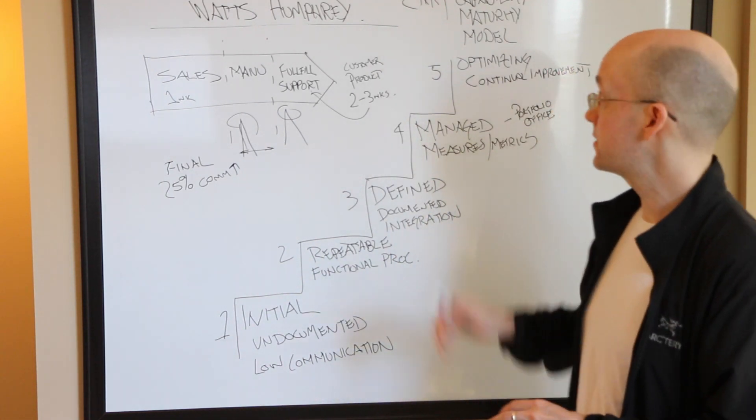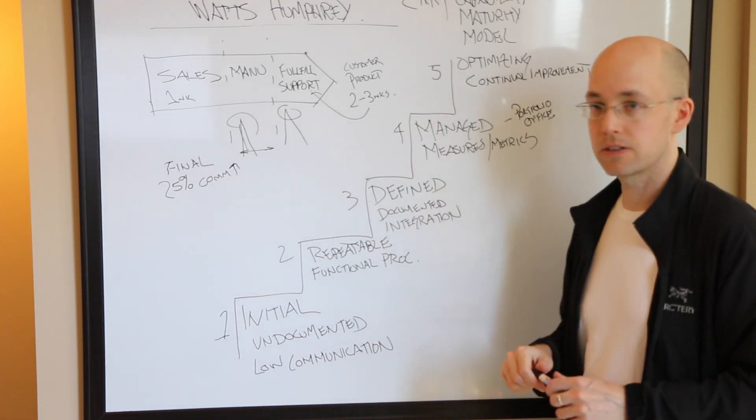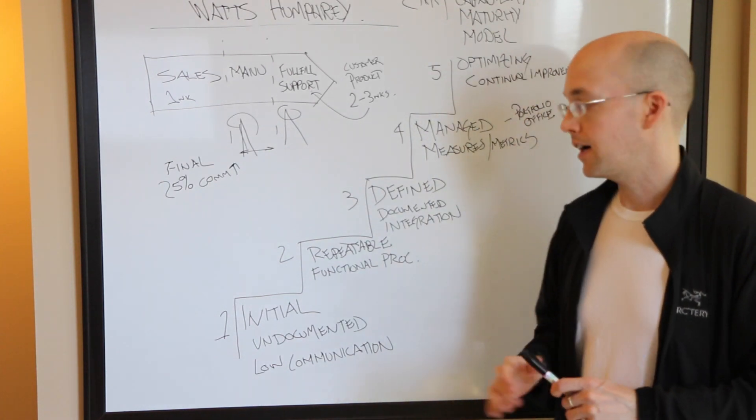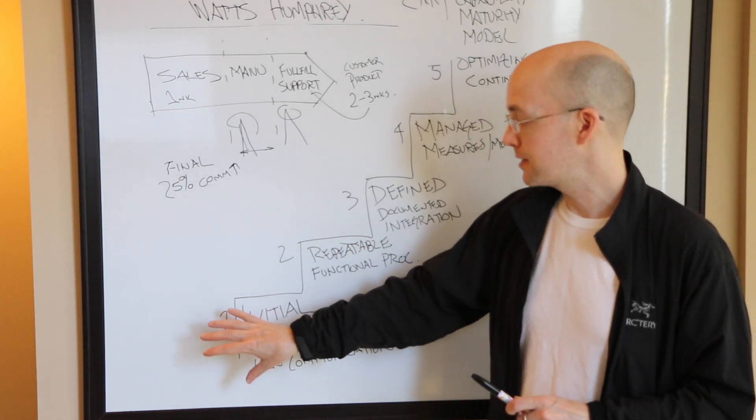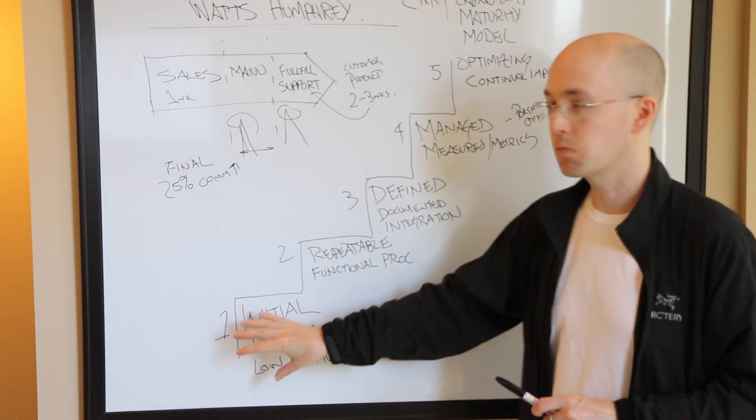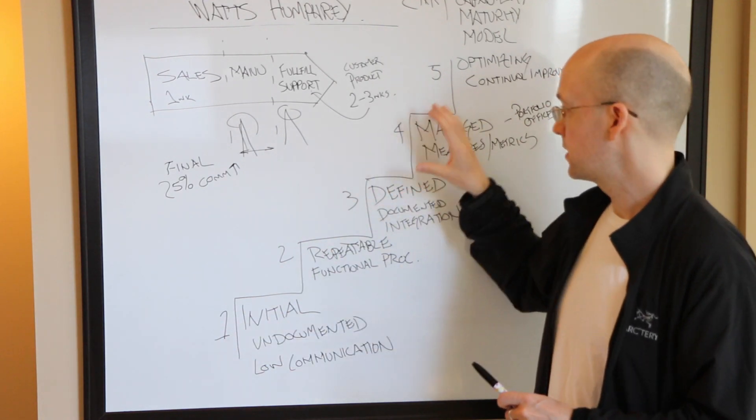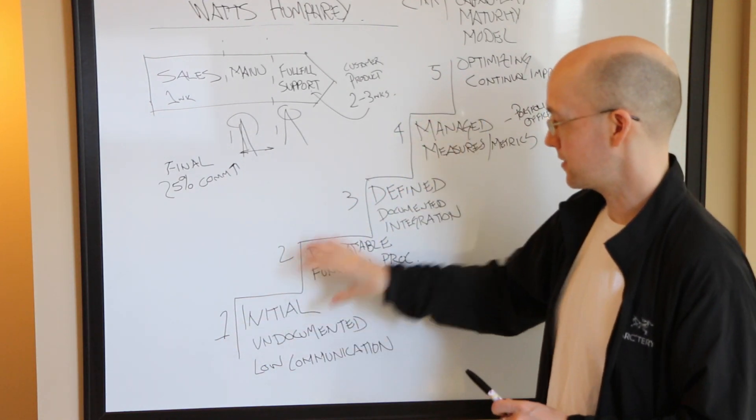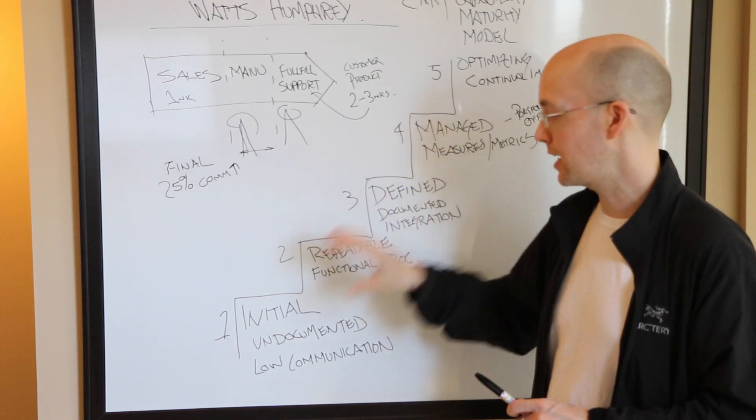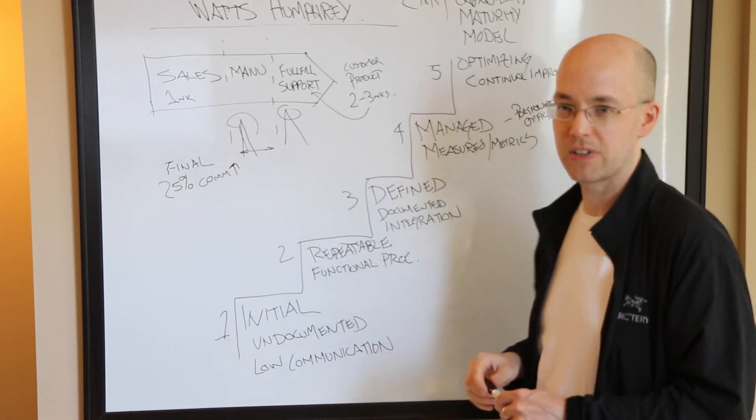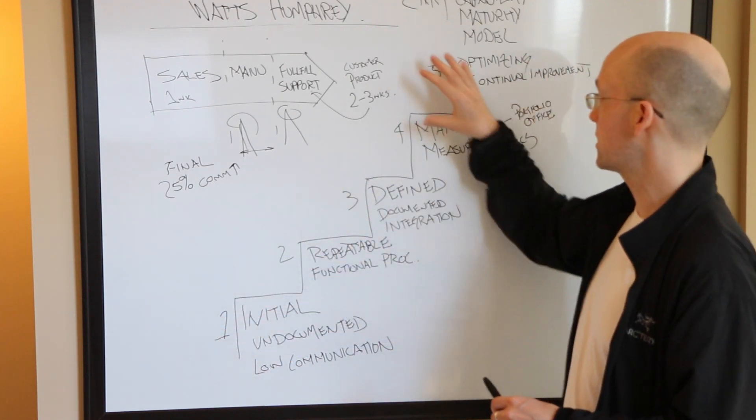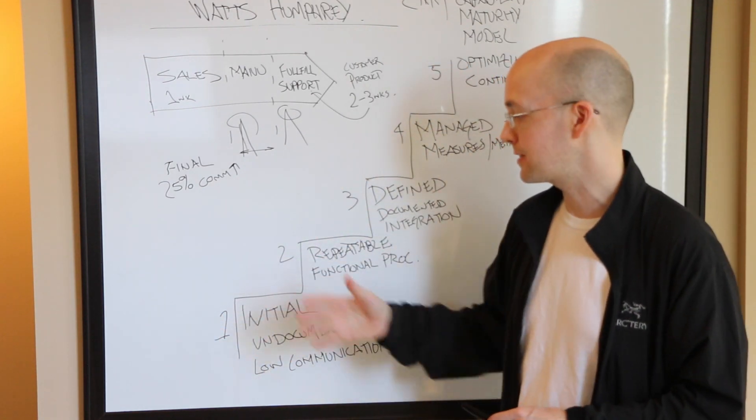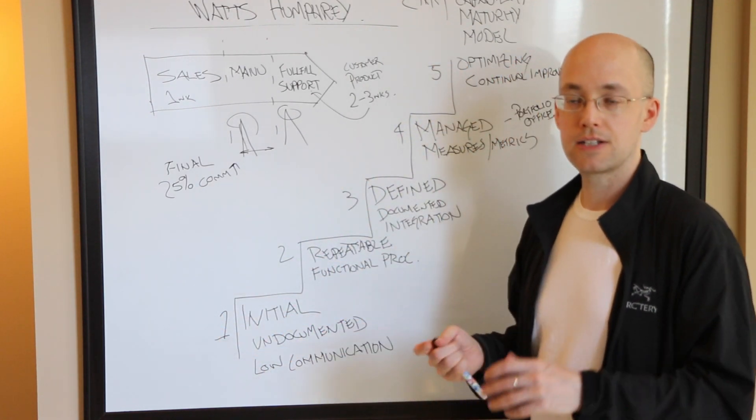So that's the Capability Maturity Model kind of in a nutshell. With this, in closing, you're not typically going to be able to jump from one step to a step that's twice removed. You have to go step by step. It's very rare that you can move up through these from one point up to a five. That's not going to happen. This takes time.